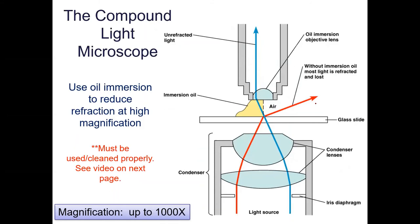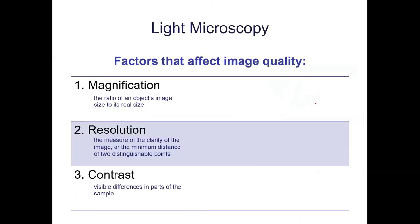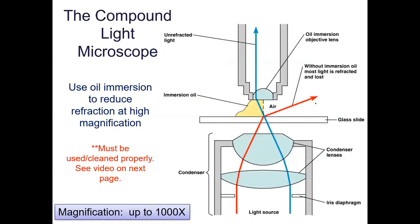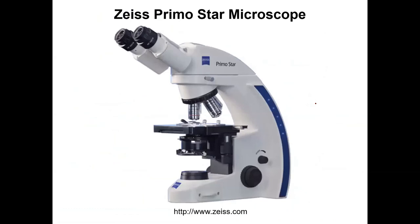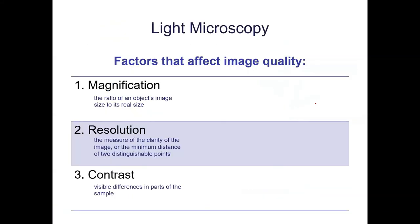In lab four we'll use a technique called oil immersion — I'll give you a demo of how that works when we get there. What I want to talk about today is what we can use in microscopy to get good images. There are three variables: magnification, resolution, and contrast.